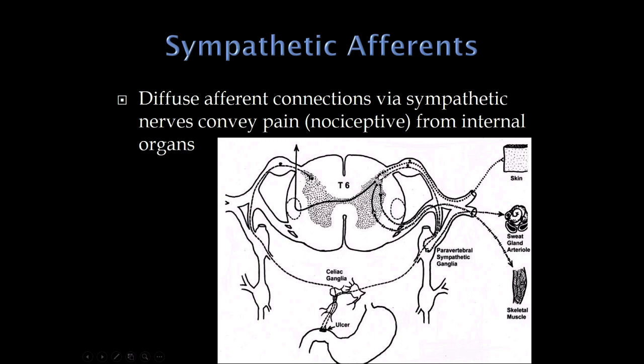We've talked about the efferents of the sympathetics; there are afferents as well, coming from all over the body. These are related to signaling painful information. For example, if a patient has a gastric ulcer, those pain fibers travel with sympathetics through the celiac ganglion going into the spinal cord. This is related to referred pain — we are not very good at localizing pain, especially in internal organs, and where you sense pain is entirely dependent on which nerve roots these pain fibers enter.